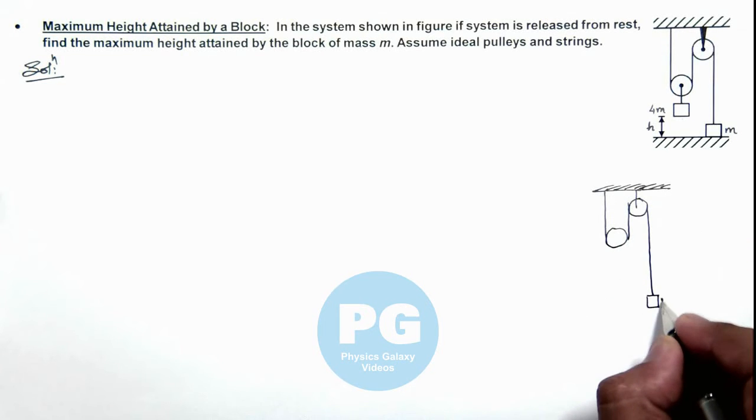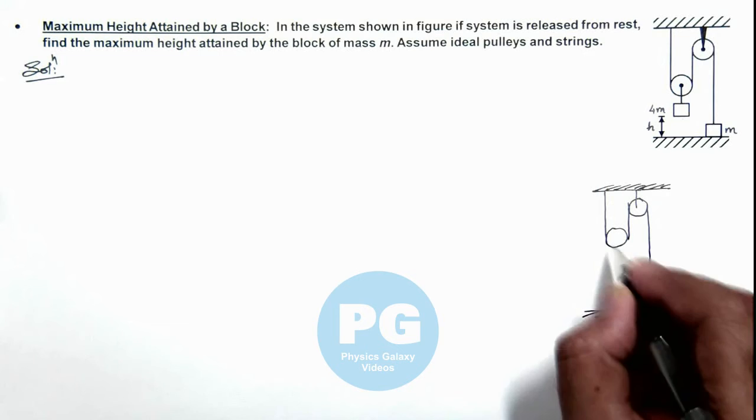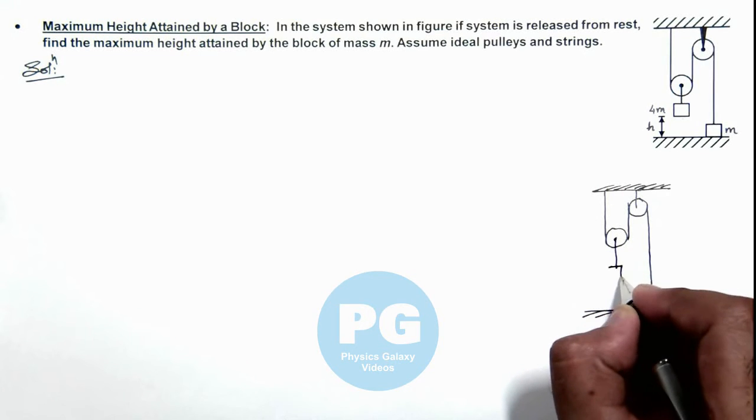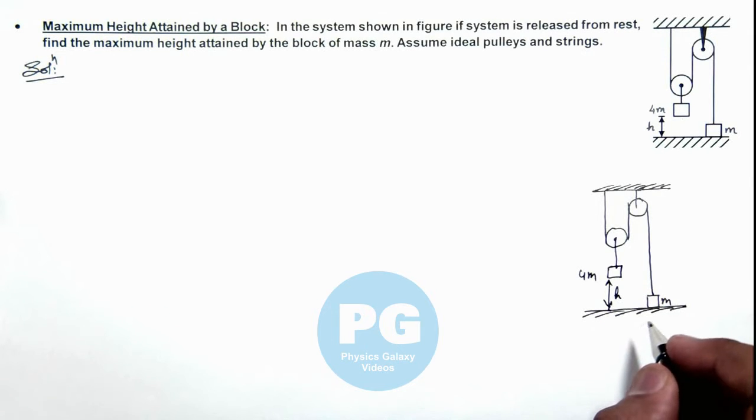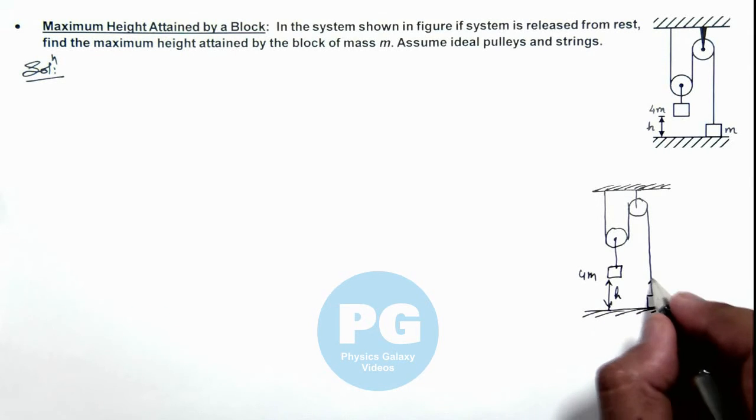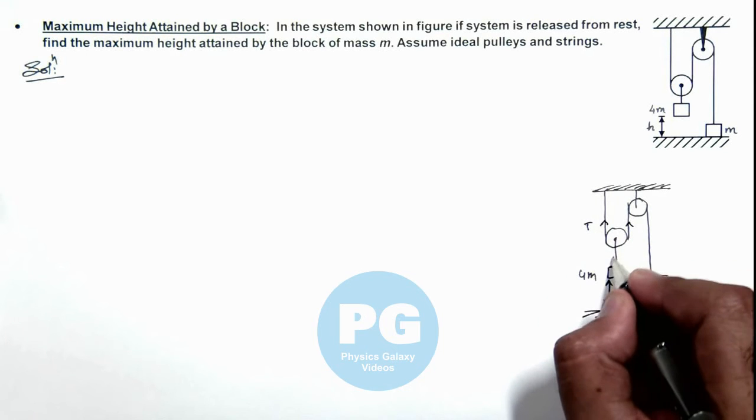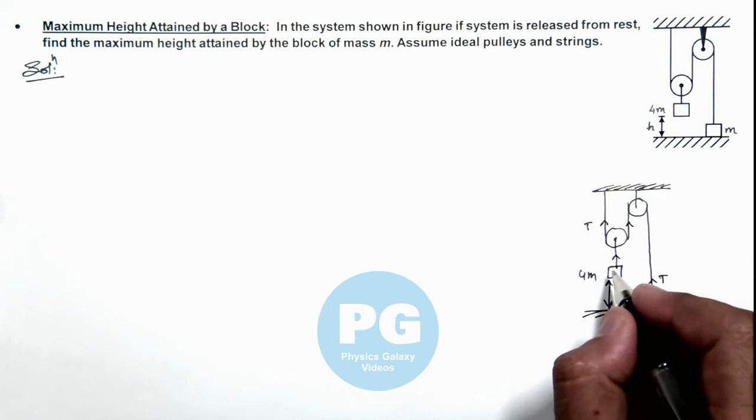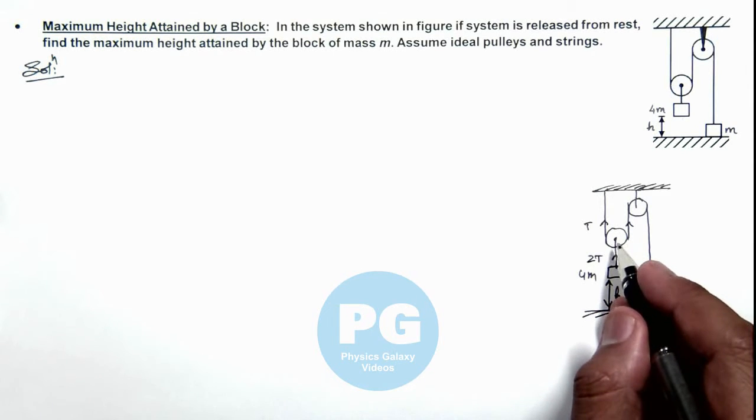Here we can see a block of mass m which is placed on the ground. Another block of mass 4m is hanging at a height h above the ground. When we release this system, if we consider tension in this string is t, then tension in the string of mass 4m will be 2t, as the string pulley system is ideal.